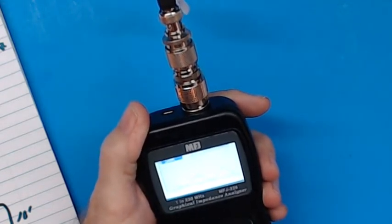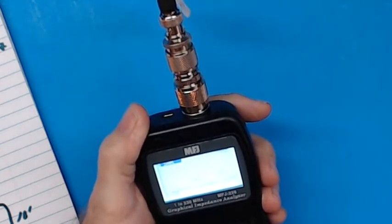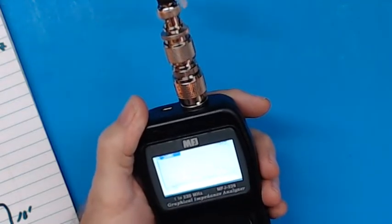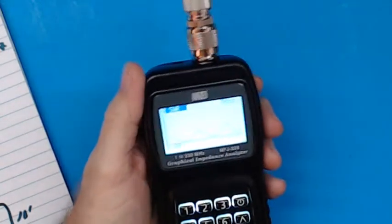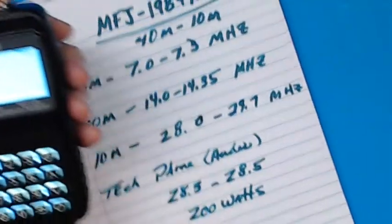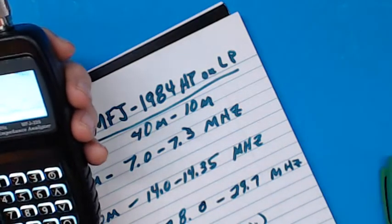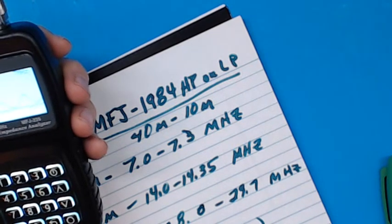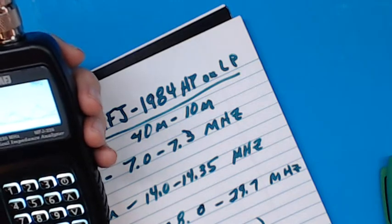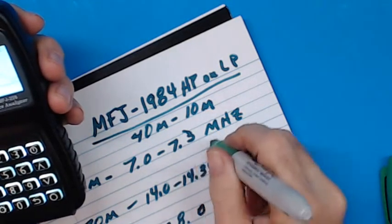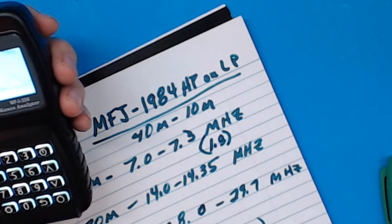I'm at 7 MHz now. The camera won't zoom in. At 7 MHz, we've got 1.8 SWR. Anything below 2 is good, so that's good. I'm going to put 1.8 SWR. That's good at 40 meters.